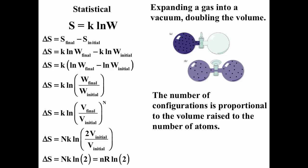Going back to the two-bulb stopcock example, we can calculate the change in entropy going from gas in one bulb to gas in both bulbs. The number of configurations is proportional to the volume raised to the number of atoms, so ΔS = S_final − S_initial using S = k·ln(W). We get ΔS = k·ln(W_final / W_initial), and W_final / W_initial = (V_final / V_initial)^N, where N is the number of particles. N can come out of the natural log, giving ΔS = N·k·ln(V_final / V_initial).